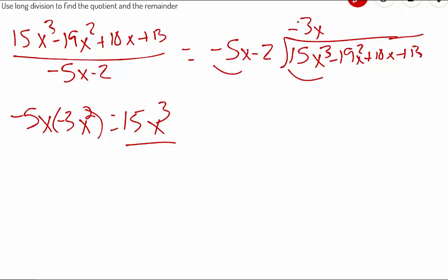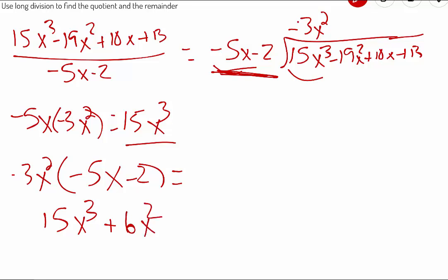So I'm going to say it's going to go in negative 3x squared times. The next step after that is to take the negative 3x squared and multiply it to your entire divisor, the negative 5x minus 2.